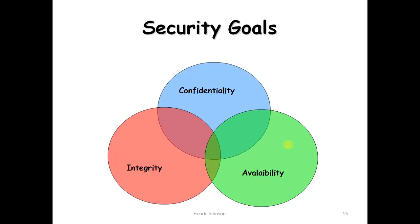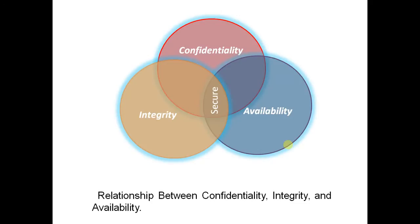Security goals include confidentiality, integrity, and availability. There is a secure system built around these three principles — commonly known as the CIA triad.